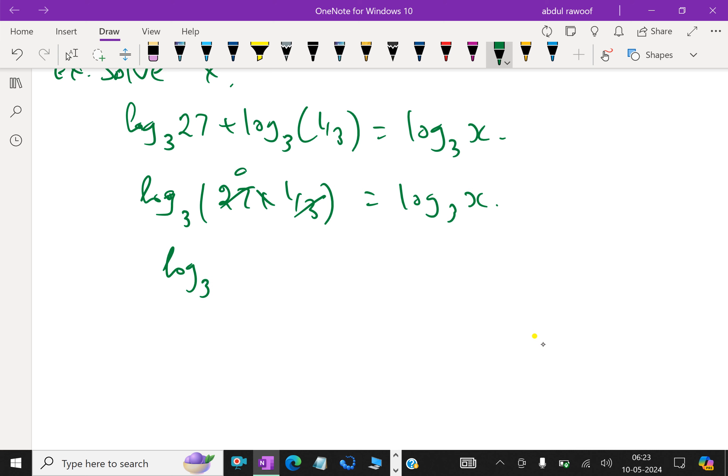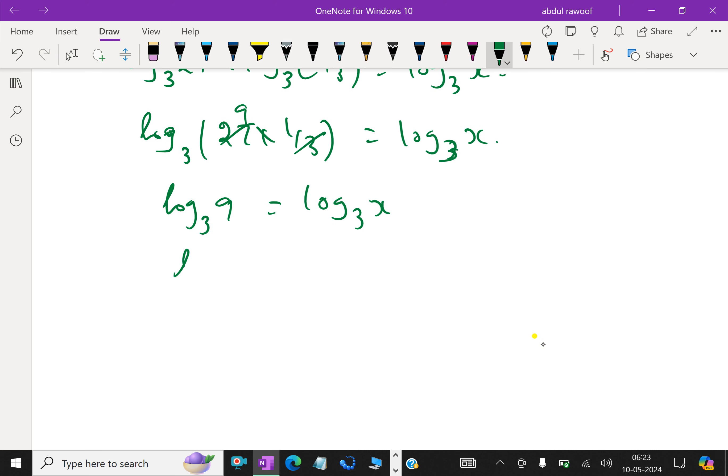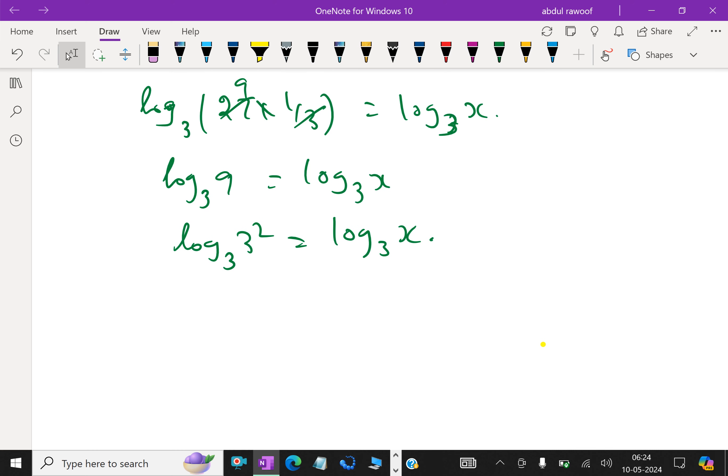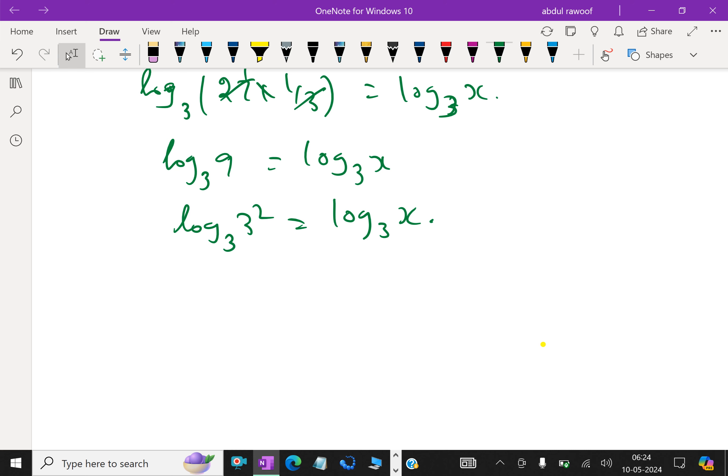This equals log base 3 of 9 equals log base 3 of x. 9 can be written as 3 squared. Since both sides have log base 3, we remove them. Therefore x equals 3 squared, so x equals 9.